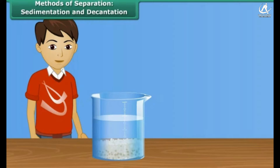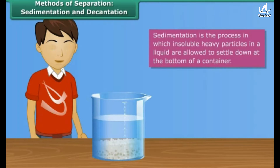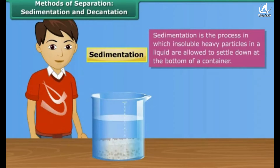The beaker had clear water. Mud, being heavy, had settled down at the bottom of the beaker while the water formed the upper layer. This process of deposition of mud at the bottom of the beaker is called sedimentation, and the layer of mud is called the sediment.